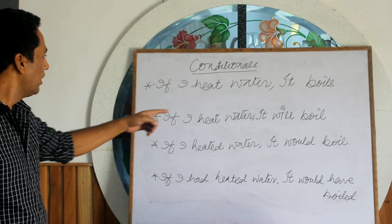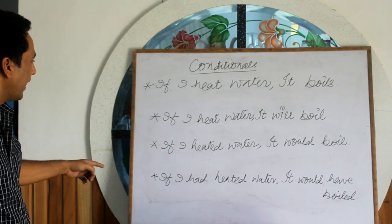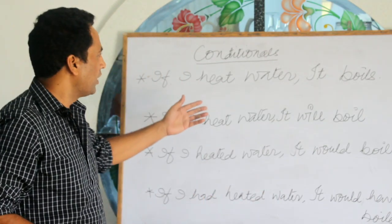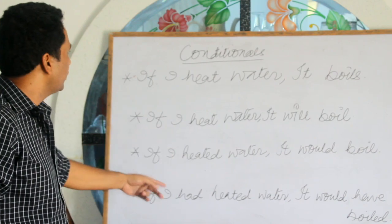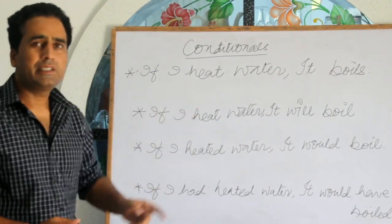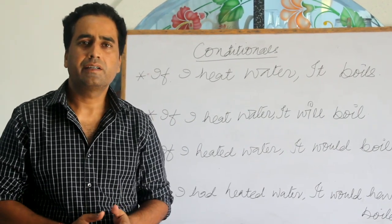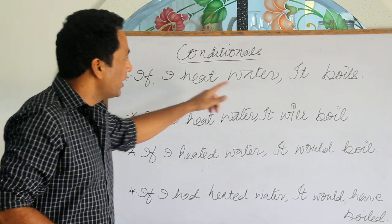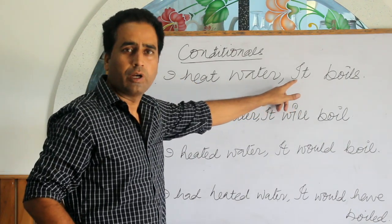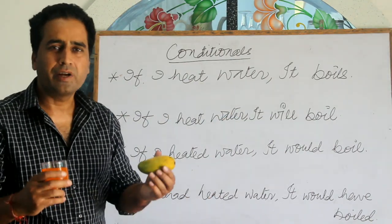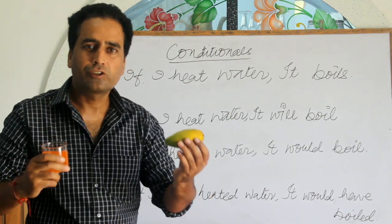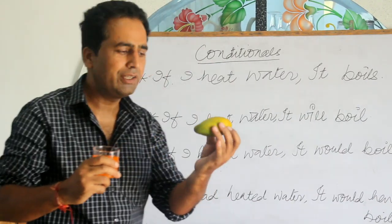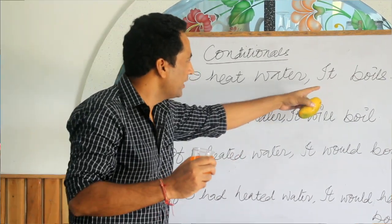If I had heated water, it would have boiled. So, what is common in these examples? There are two parts — two clauses separated by one and they all use the conjunction 'if'. The if-clause is the condition or event that must happen for the other thing to happen. That is why it is called the if-clause. We cannot get mango juice without squeezing a mango. The result can only happen if the if-clause happens.